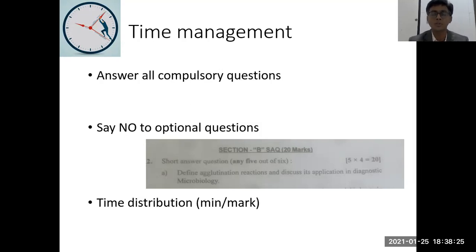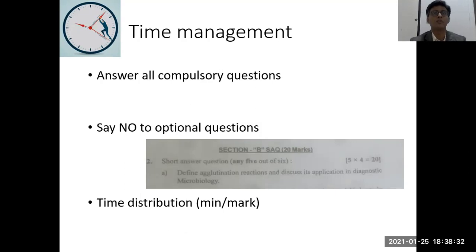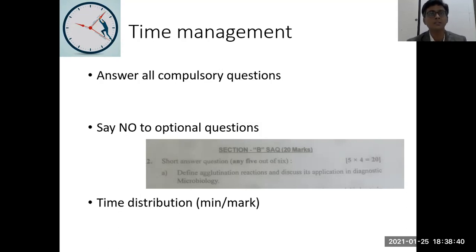Last but not the least, time distribution must be carried out. For example, if you are appearing for an exam of 30 marks for a duration of 30 minutes, then one mark is equal to one minute. So if a short answer question is for four marks, that means you have to complete that answer in four minutes.